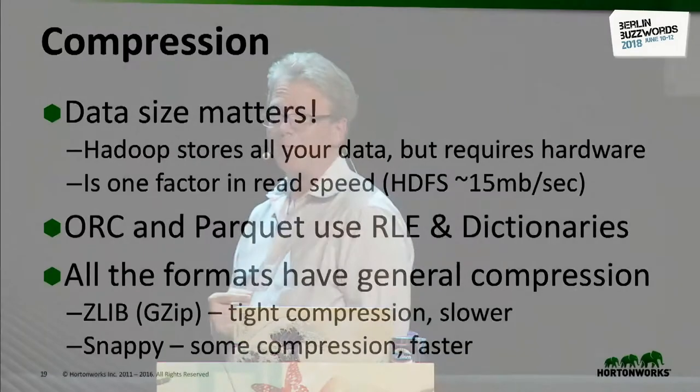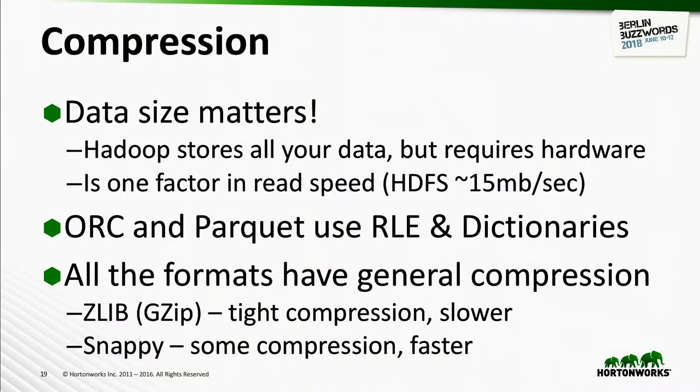So Avro is largely set aside for this benchmark. Why does data size matter? Because you're storing three copies of each data file in Hadoop. When Facebook moved from RC file to ORC, they saved around 100 terabytes and were decommissioning servers because they suddenly didn't need them anymore. File size is also a big factor in read speed — HDFS read speeds are typically about 15 megabytes a second in a real cluster, not the 100 MB/s the HDFS folks claim, which only works on an empty cluster.